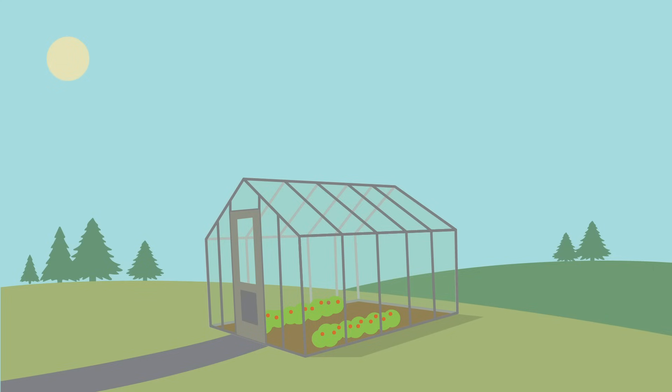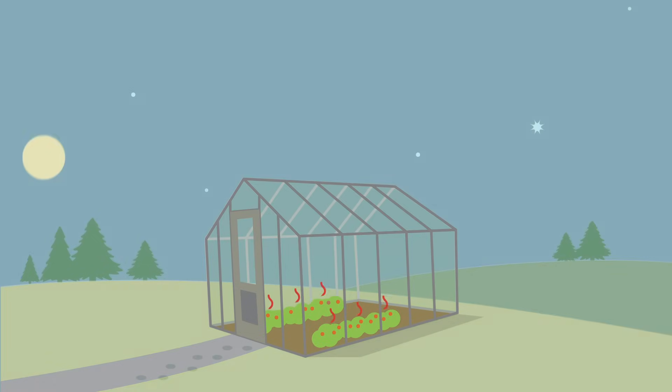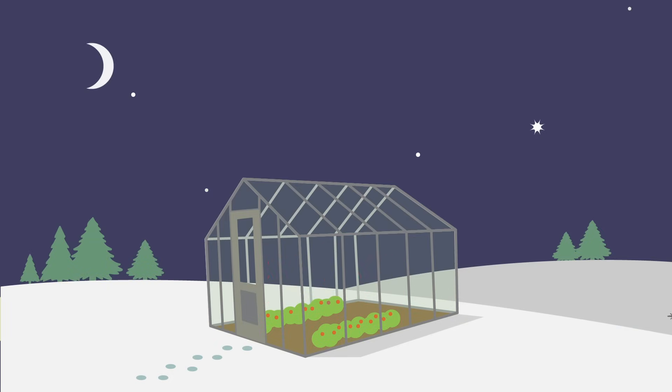A greenhouse is a building with glass walls and a glass roof. The clear glass allows sunlight to shine into the greenhouse while also trapping the sun's heat inside. This is how a greenhouse keeps plants warm even at night and in the winter.